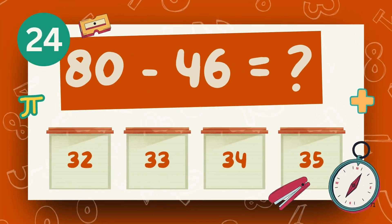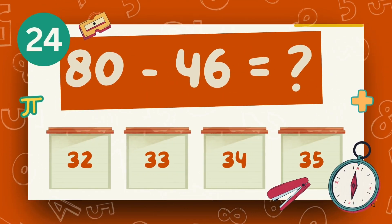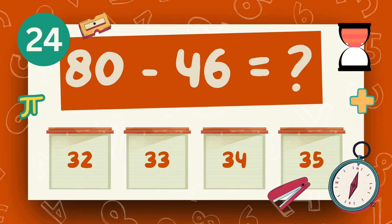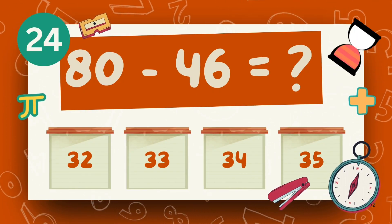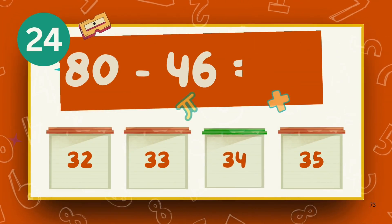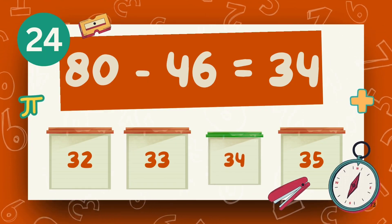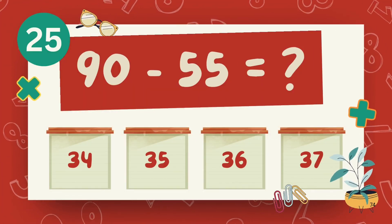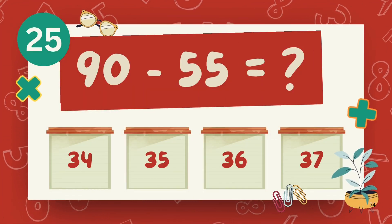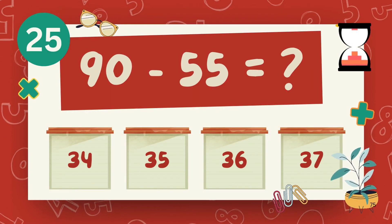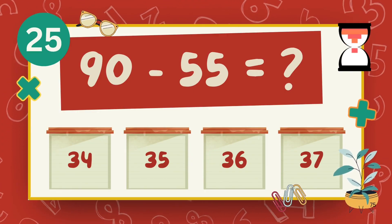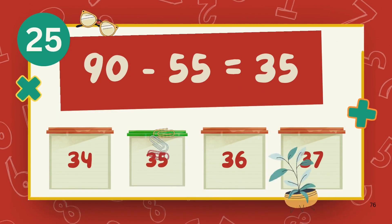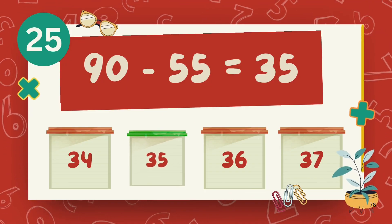What is 70 minus 46? The answer is 36. What is 90 minus 55? The answer is 34.